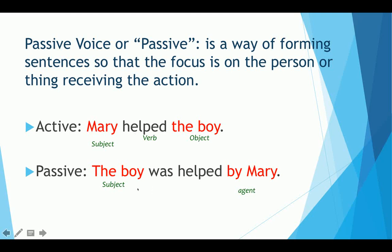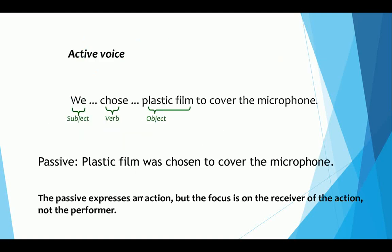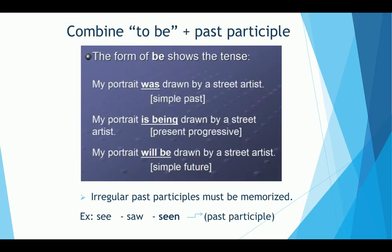These two sentences have the very same meaning. It's just that the style of expressing the message is different. I can say 'Mary helped the boy' or 'The boy was helped by Mary.' Another example: 'We chose plastic film to cover the microphone' or 'Plastic film was chosen to cover the microphone.' To form the passive voice, combine 'to be' — in the present, past, or future — plus the past participle.